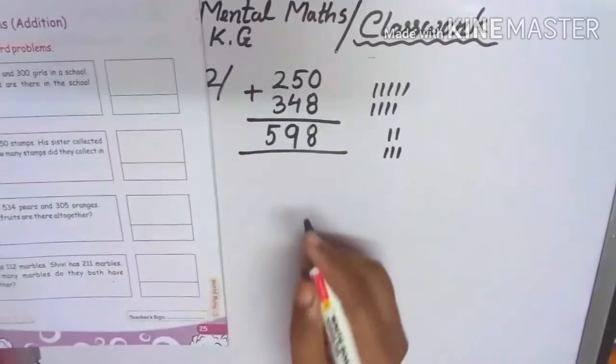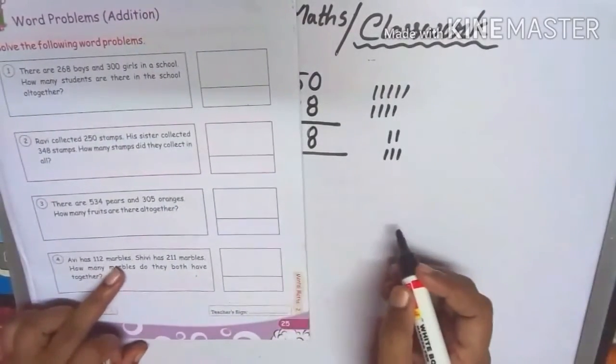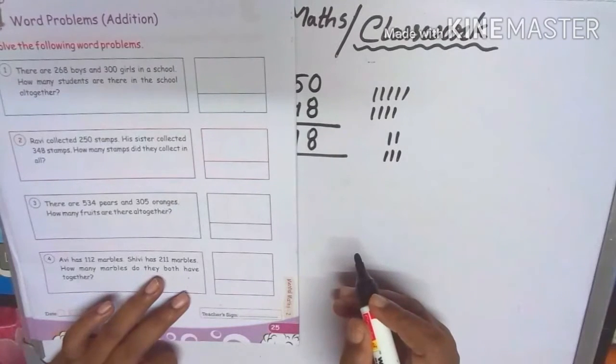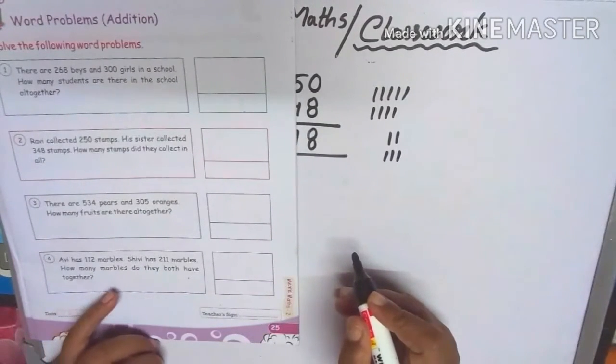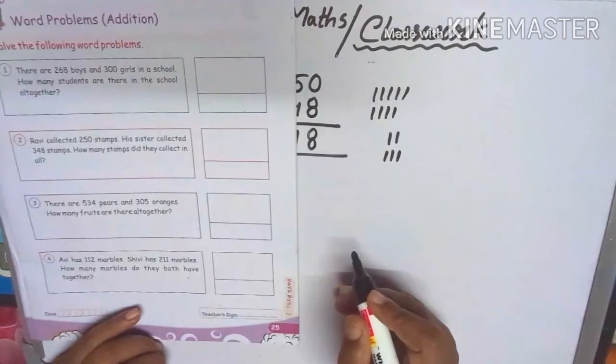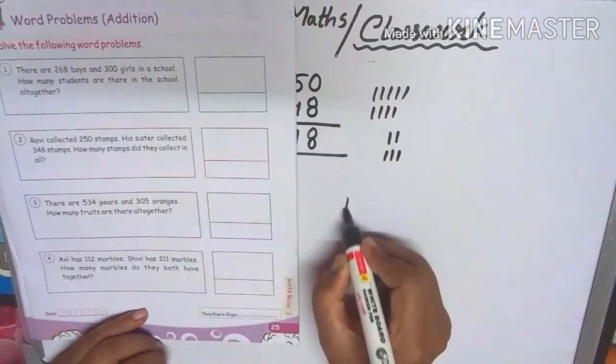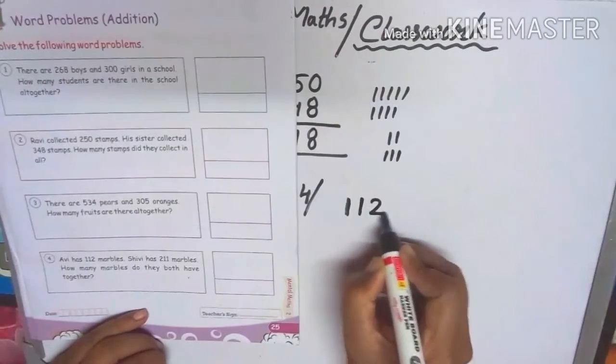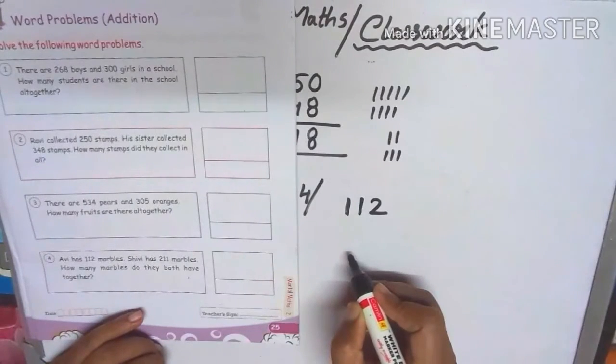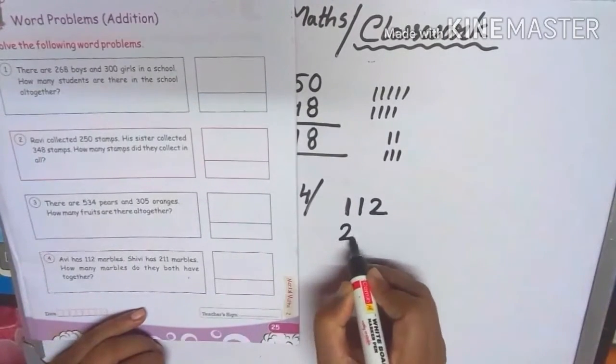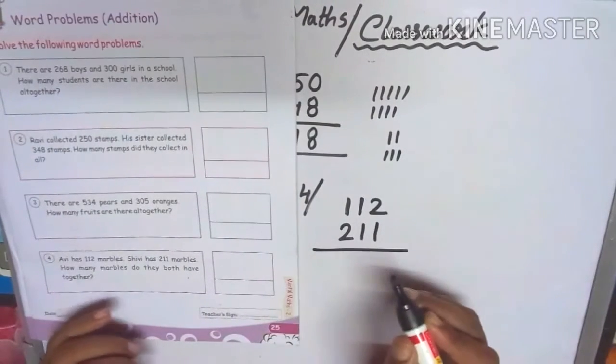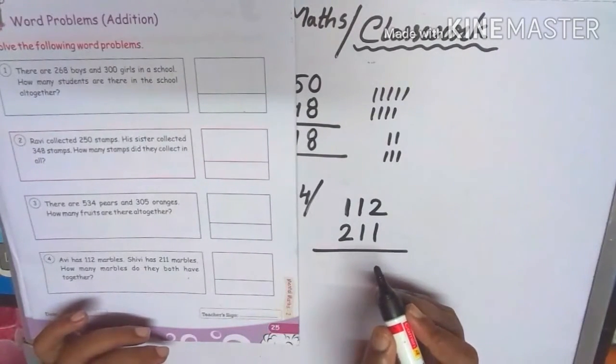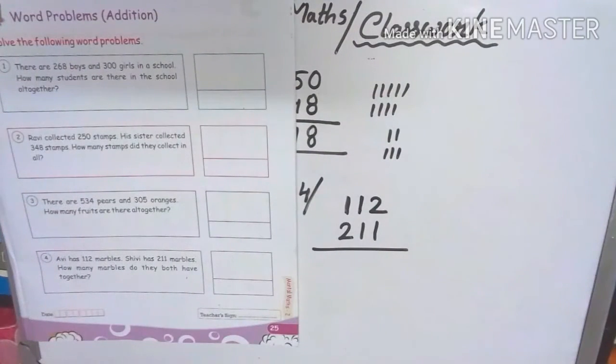Follow me children. Abhi has 112 marbles. CV has 211 marbles. How many marbles do they both have together? So you know this is addition.